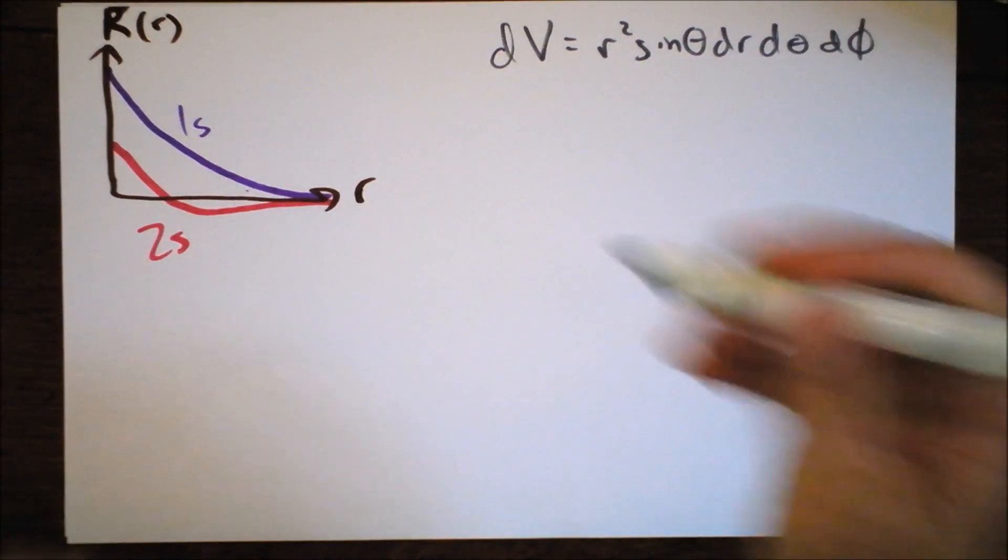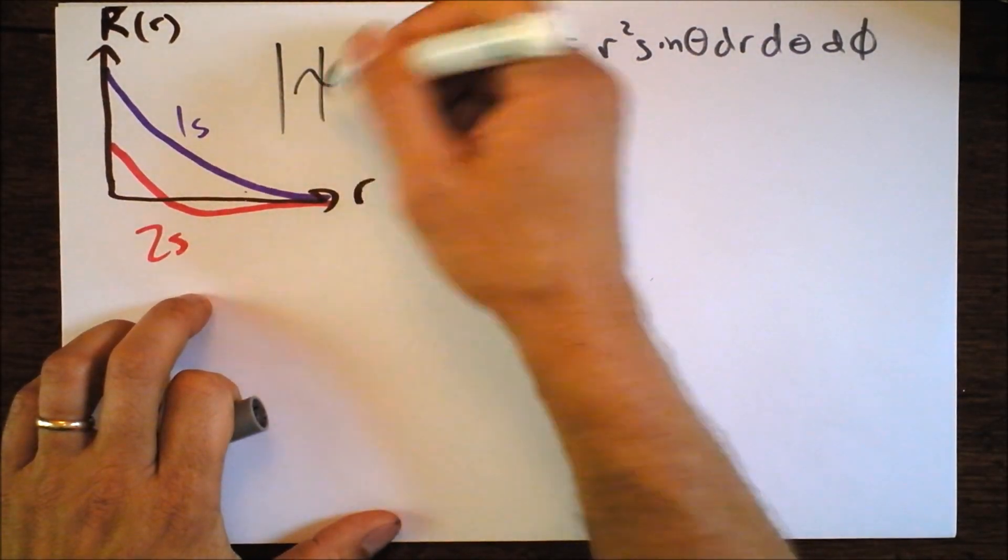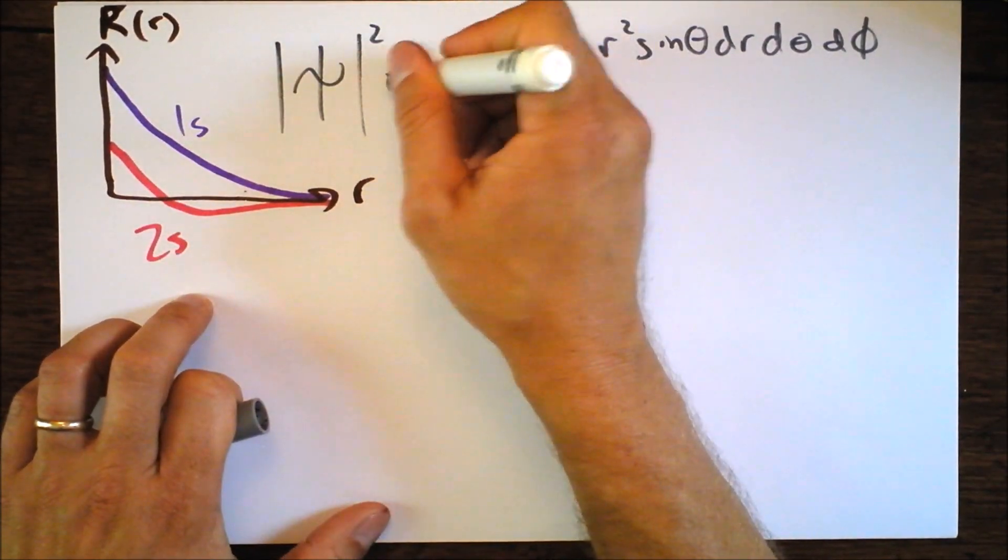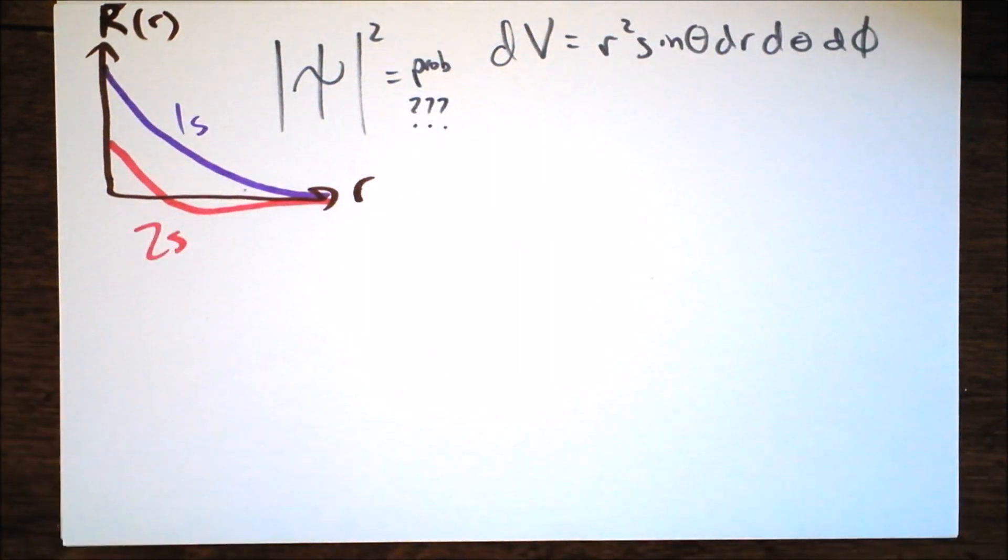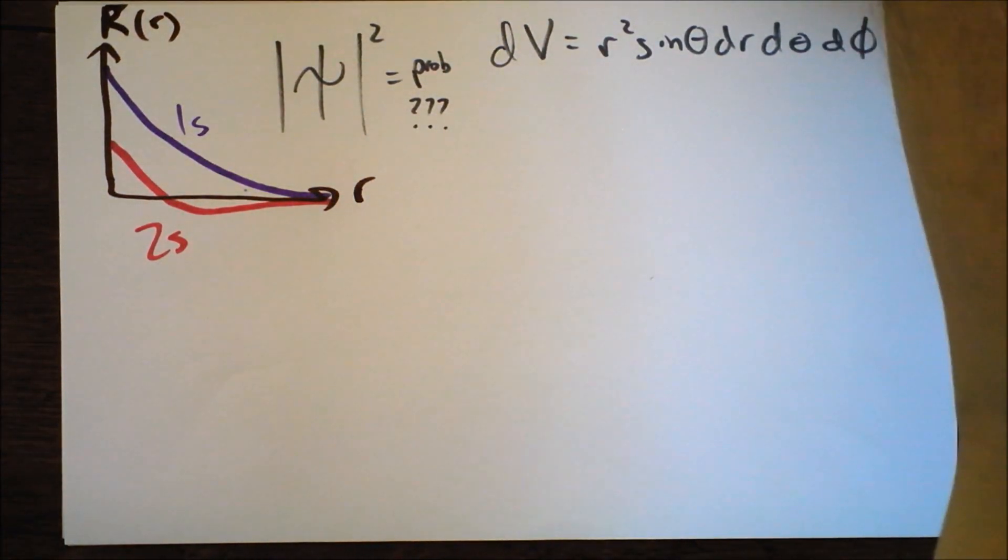This is the wave function. So we're going to be looking at squaring that wave function to kind of get probability. But I'll put some question marks by this because we get some really interesting stuff with probabilities.